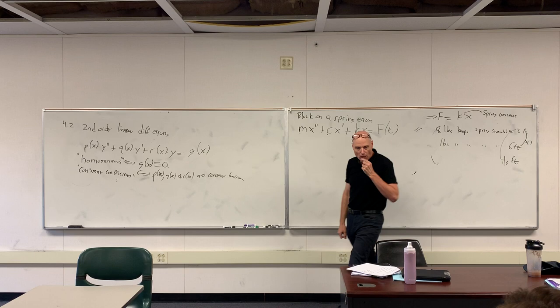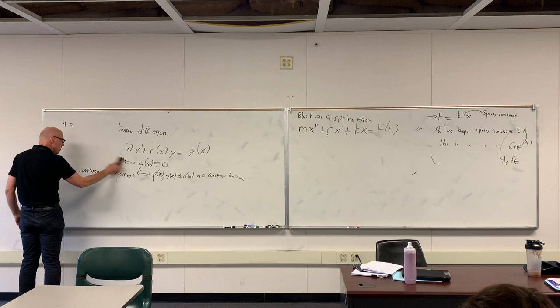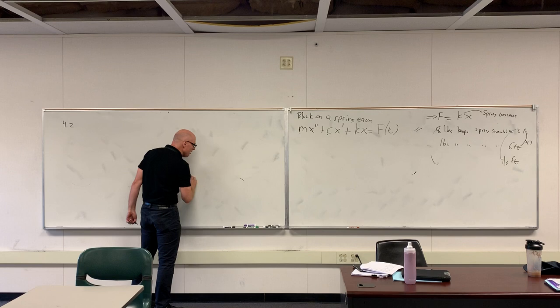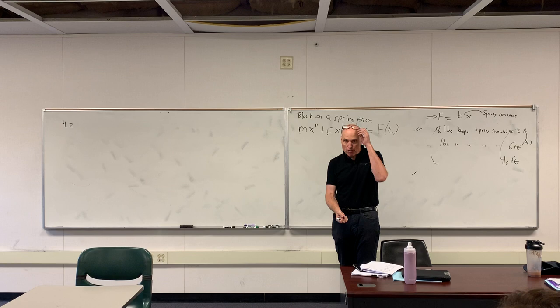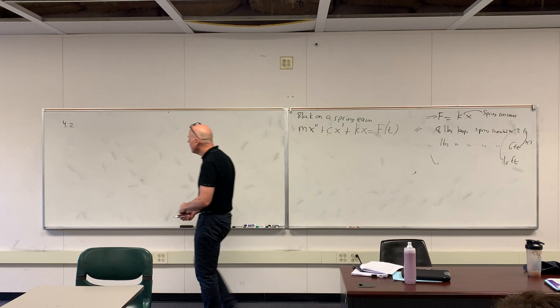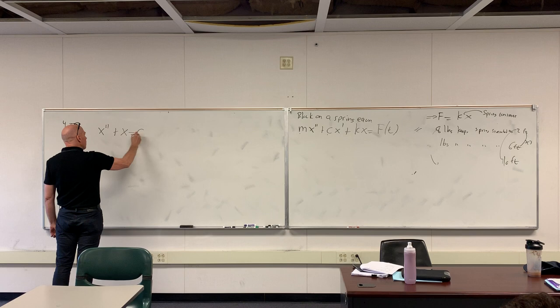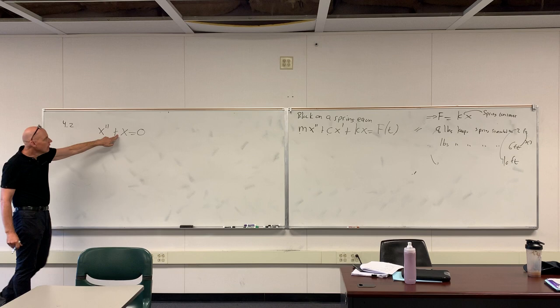Let's do the simplest possible block-on-a-spring problem. The magnet is optional, so the simplest would give us x-double-prime plus x equals zero. I'm going to switch to y's because we're looking at this mathematically. But my motivation for studying these is I want you to think back to your Calculus 1 class.